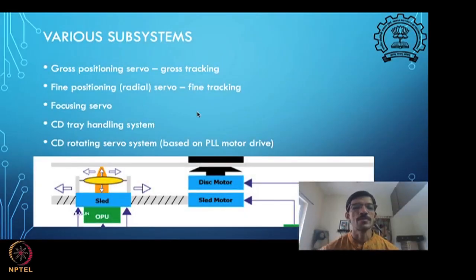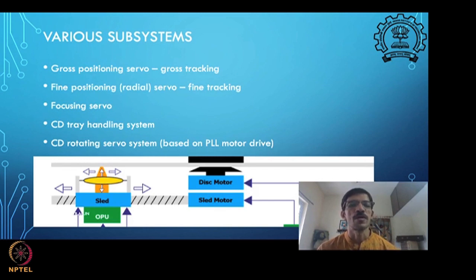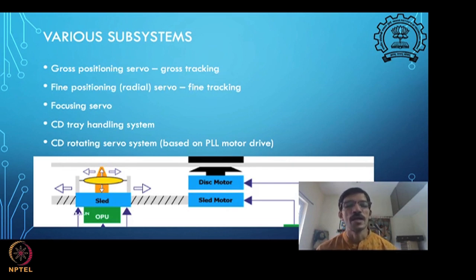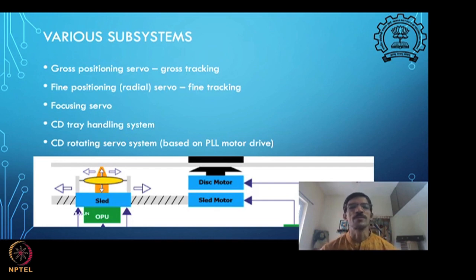Now we come to the classification of these different subsystems that are normally present. We have seen the gross positioning happening, but that is not sufficient. The positioning accuracy we talked about is around 100 nanometers, and you can imagine that no stepper motor drive can produce that kind of high-precision positioning.